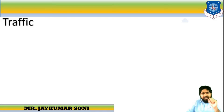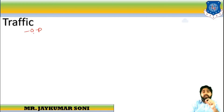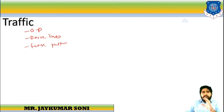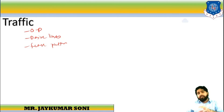T stands for Traffic. The alignment should be proposed so that it suits the traffic conditions and requirements of the particular area. To achieve this, we need to conduct origin and destination studies, plot desire lines, and study the future pattern of traffic — for example, projecting the next 10 years based on past trends.